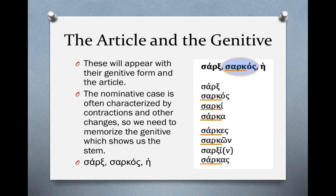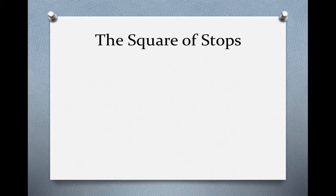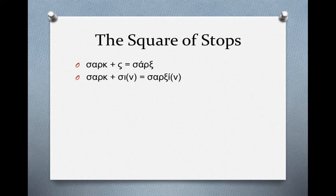So we'd memorize a word like sarx as: sarx, sarkos, hē. Any discussion of third declension nouns has to involve the square of stops, which helps make sense of the nominative form of sarx. We know the stem is sark- from the genitive sarkos. What happened in the nominative singular was a fusion of two letters called the square of stops: when kappa meets sigma, it becomes xi. That's logical because xi sounds like kappa plus sigma — the xi is that 'ks' sound. This happens in the nominative singular and in the dative plural, where we see sarxin.